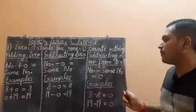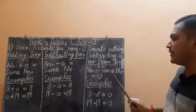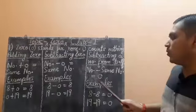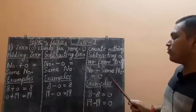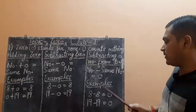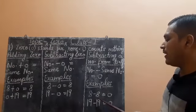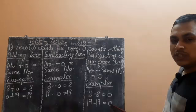Now when you are subtracting a number from itself, so number minus same number is equal to zero. Here you are subtracting a number from the same number. So the answer is always zero. Just see some examples. 8 minus 8 is 0 and 19 minus 19 is also 0.